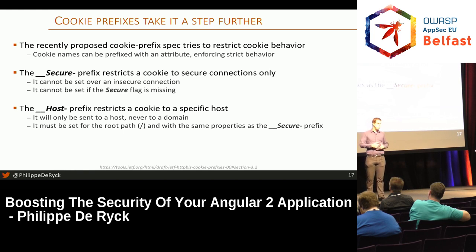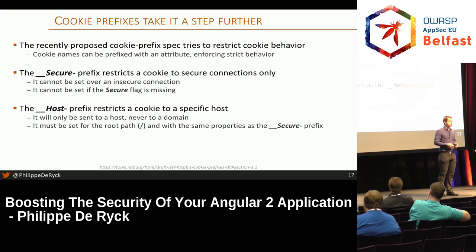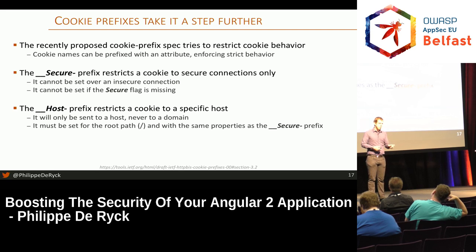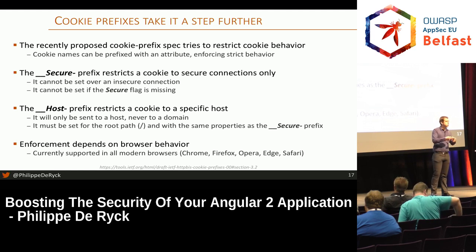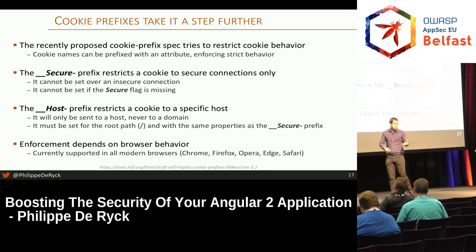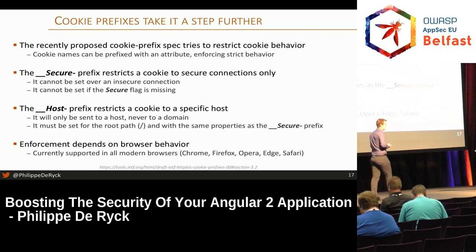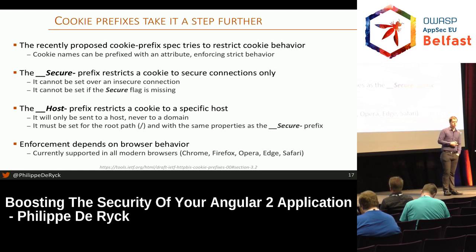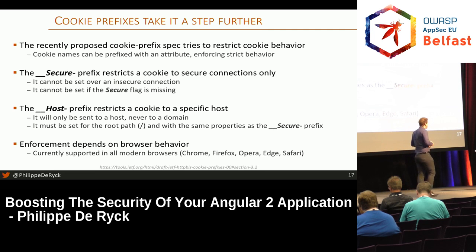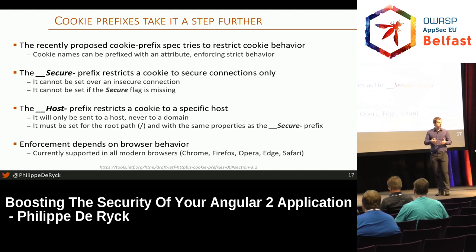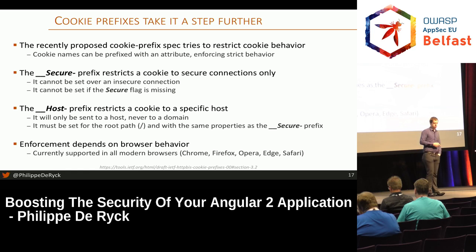The second prefix is the Host prefix. The Host prefix subsumes the Secure prefix — it enforces everything from the Secure prefix — but it also makes sure that the cookie belongs to a specific host and can never be sent to an entire domain. So if the server receives a cookie with the __Host- prefix in the name, and the browser supports this — all modern browsers do nowadays — then the server knows the cookie did not come from a subdomain, that it was not set by an attacker who controls one of your subdomains. Support is widespread, so this is something you can start using today. If there are people here building frameworks, please consider supporting this.